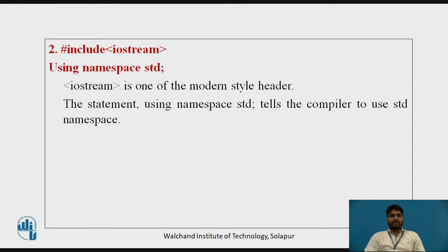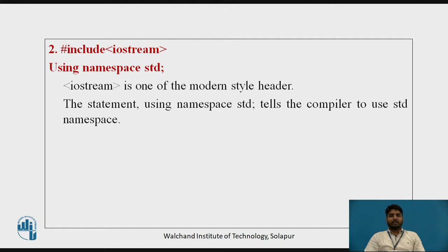Now we will see what is 'using namespace standard'. Here, iostream is one of the modern style headers. The new style headers do not specify file names; instead, they simply specify standard identifiers that may be mapped to files by the compiler, although they need not be. The new style headers are an abstraction that simply guarantees that the appropriate prototypes and definitions required by the C++ library have been declared. The statement 'using namespace standard' tells the compiler to use the standard namespace. This is the namespace in which the entire C++ library is declared. By using standard namespace, you simply access the entire standard library.